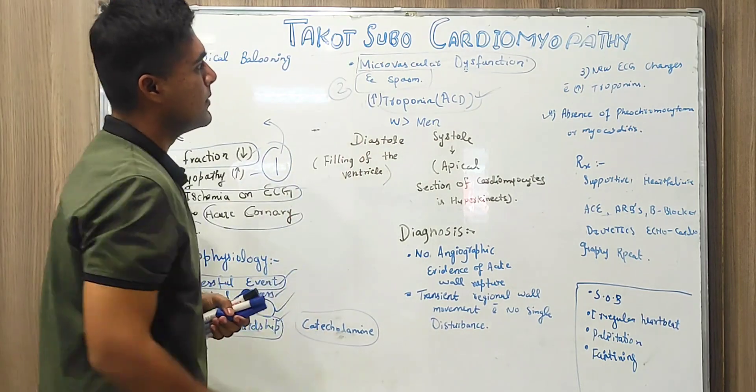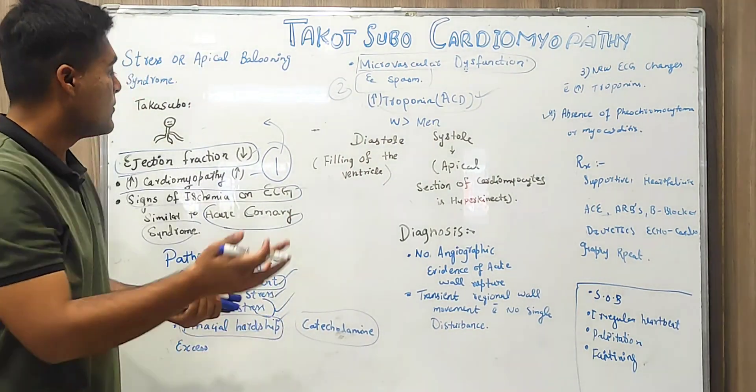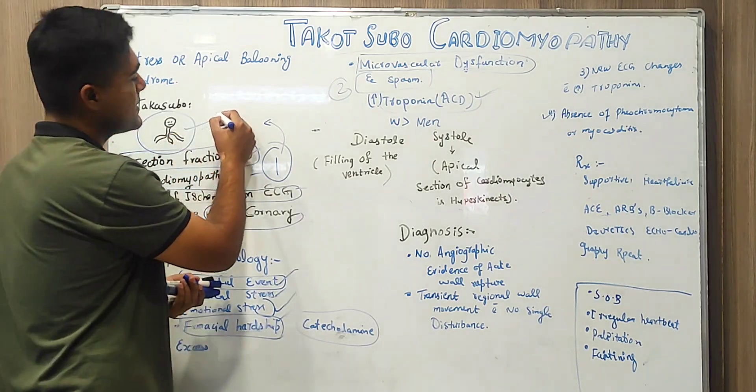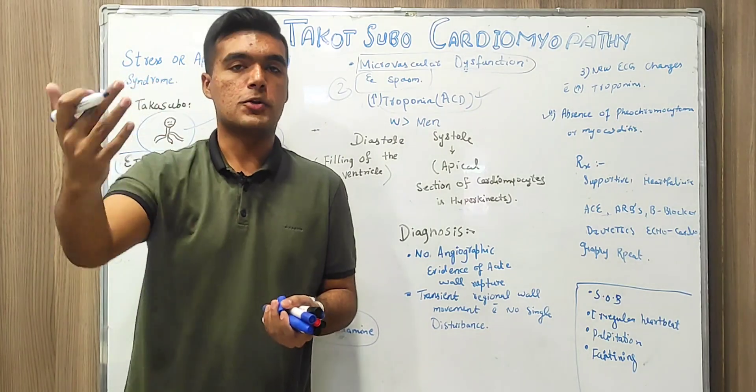And Takotsubo, it is basically a Japanese word and we gave it the name from octopus. Its shape is similar to this. So we gave it the name Takotsubo Cardiomyopathy.